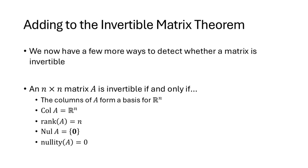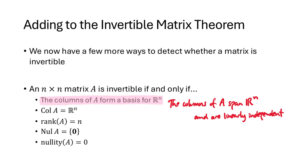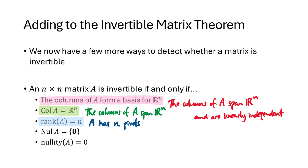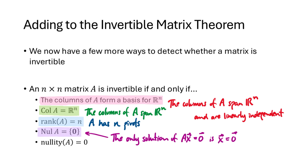This also gives us a few more ways to characterize when a square matrix is invertible. The columns of A form a basis for Rn, meaning they span Rn and are linearly independent — both already in the invertible matrix theorem. The column space of A is Rn, another way of saying the columns span Rn. The rank of A equals n, which means the matrix has n pivots. The null space of A is just the set containing the zero vector, meaning the only solution to Ax = 0 is x = 0. And the nullity of A equaling zero means A has no non-pivot columns, i.e., a pivot in every column — all parts of our invertible matrix theorem.